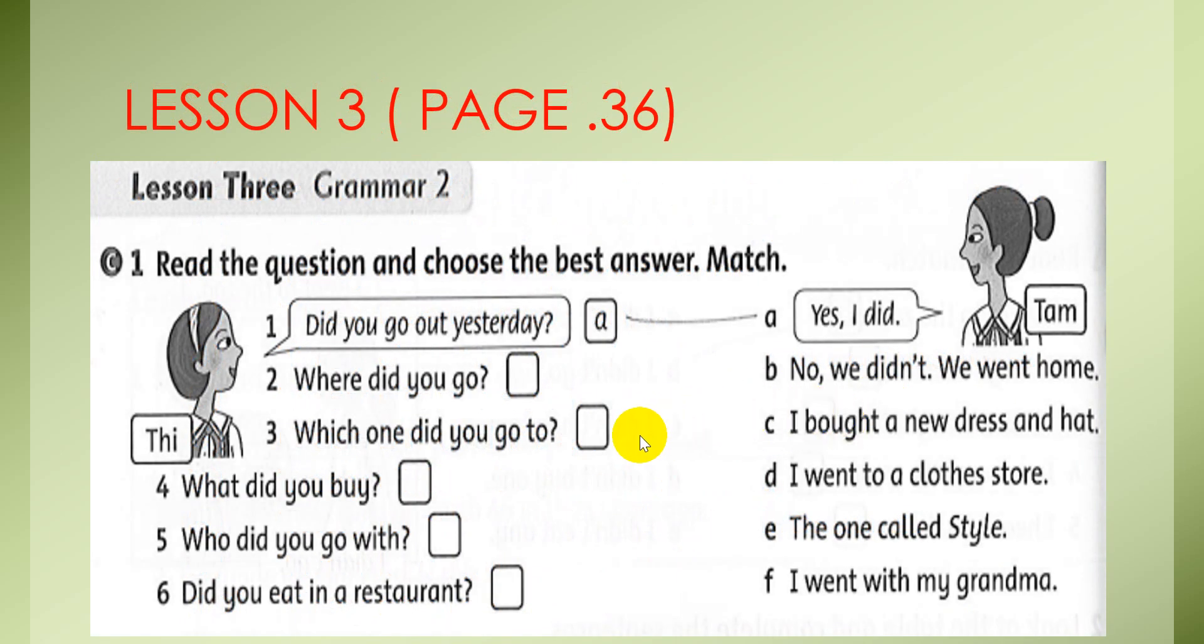And now we move to lesson 3, page 36. Number 1, read the question and choose the best answer. Match. You read the questions in the left column, and then you choose the correct answer in the right column. For example, number 1, did you go out yesterday? The answer is, yes I did.